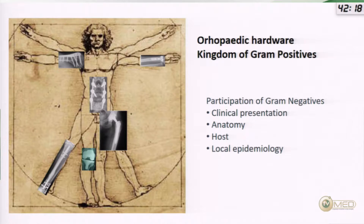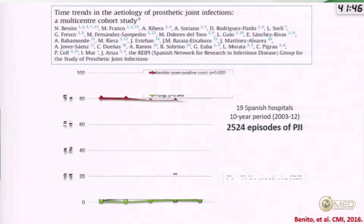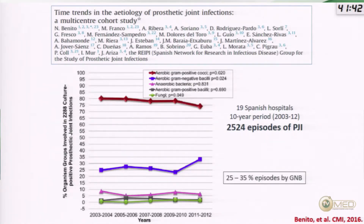We don't have many epidemiological studies, so it is difficult to be precise about etiologies in bone and joint infection. Last year in Spain, Dr. De Benito and collaborators published an important study with more than 2,500 prosthetic joint infections, addressing etiologies over a period of 10 years in a large number of Spanish hospitals. Gram-positives remain the most important microorganisms, but in recent years there is a significant trend towards a higher frequency of gram-negative infection.